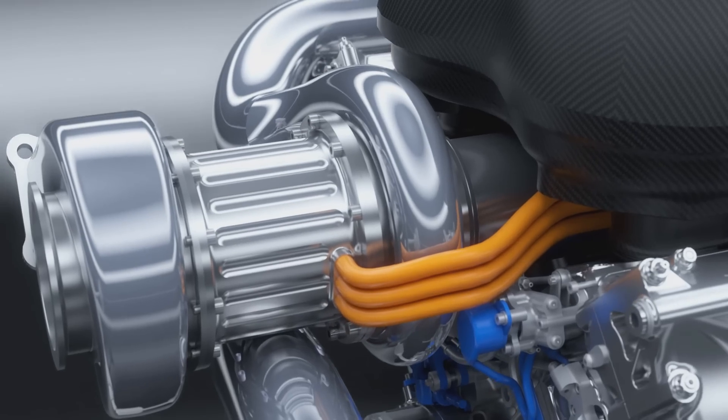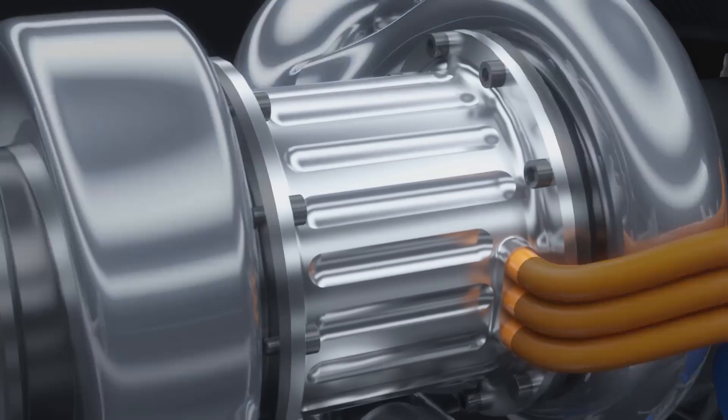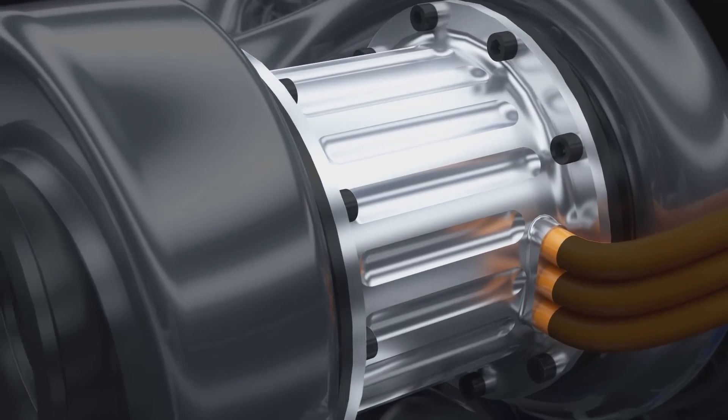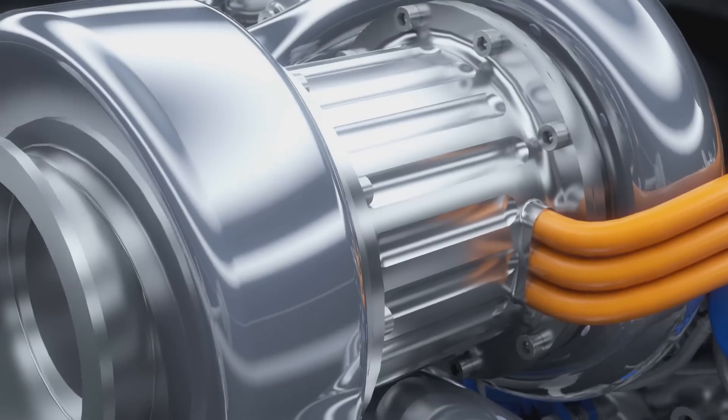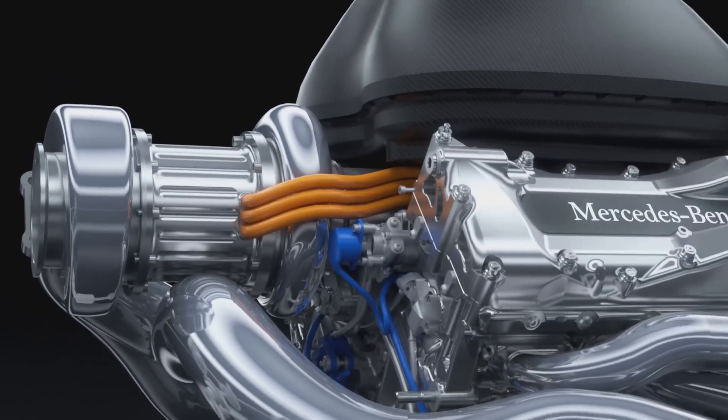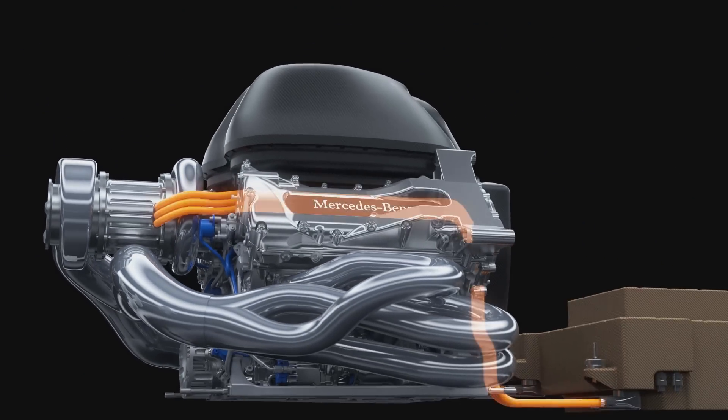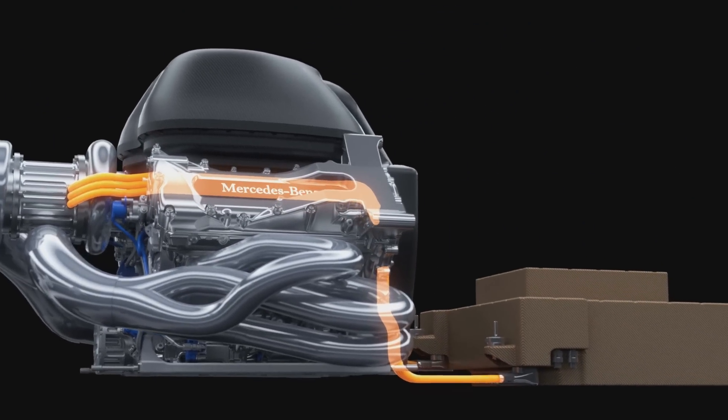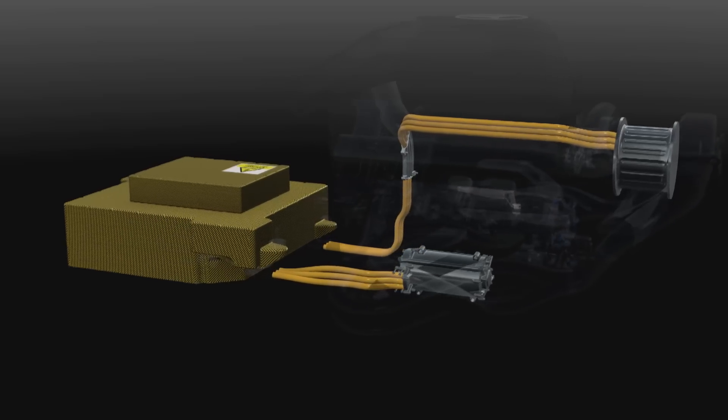The second motor generator unit, the MGU-H, harvests the turbo energy. As a motor, it spins up the compressor to eliminate turbo lag, but it can also send energy directly to the other electric machine and vice versa for maximum efficiency.